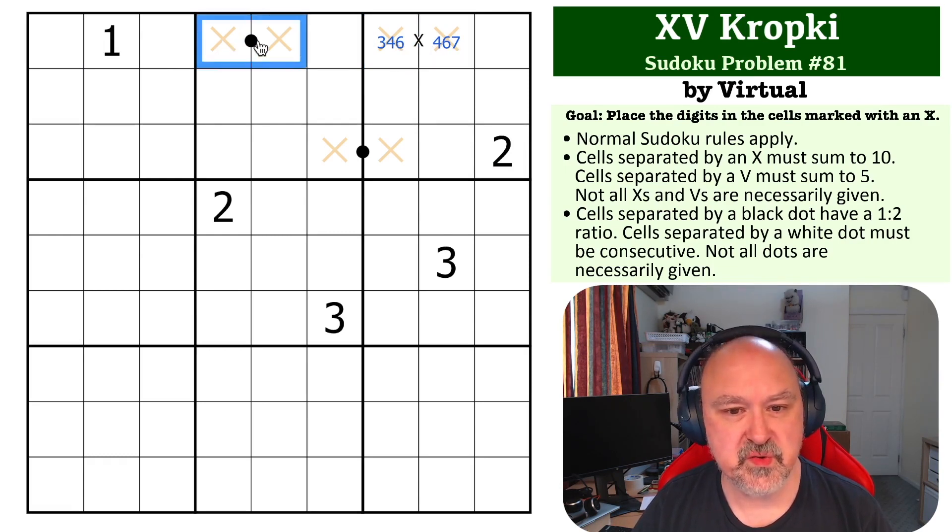Now we want to look at this black dot, because one of these options either must have a 3 or a 6 on it. The 3-7 will use the 3 and the 4-6 will use the 6. So this cannot be a 3-6 dot. If this is a 3-6 dot, what's left here cannot be filled. You cannot make 10 over here anymore.